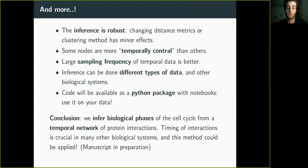And yeah, as a conclusion, we infer biological phases of the cell cycle from a temporal network. And this is the case that timing of interactions is very important in many different biological networks. We don't always have temporal information about all the interactions, but still we can apply this. And so we believe it can be applied to many biological systems and we hope it's going to be done.